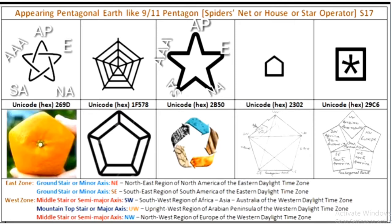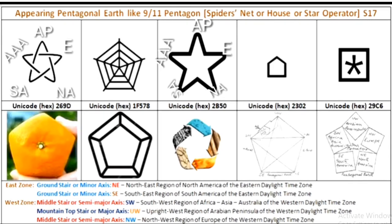There is a difference between star and star operator. A star is like a diamond — a four-figured star or a quadrilateral star. A star operator is a pentagon like appearing pentagonal earth or 9-11 Pentagon. It is certain like my existence as a finite rational being that our earth is a pentagon. Appearing earth is a pentagon — you just try to recognize your existence in this appearing pentagonal earth.